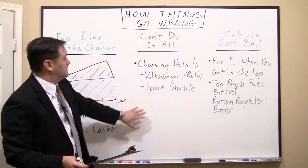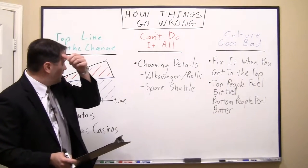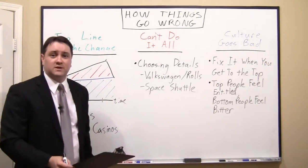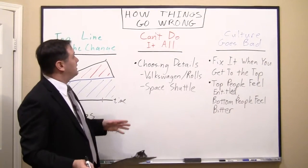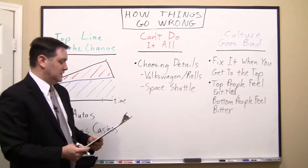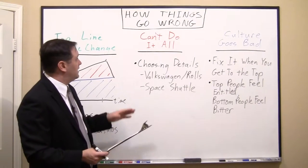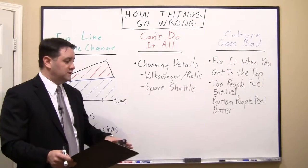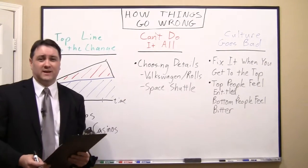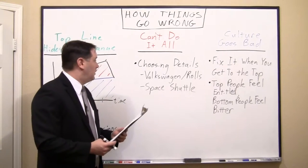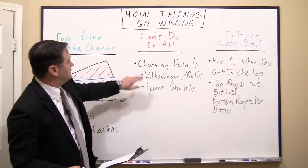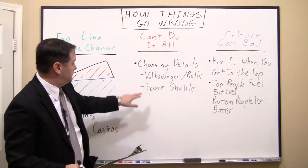The next one I want to talk about is an example of decision making. The truth is, in business we're oftentimes stressed for time and resources and bandwidth, and we can't always do it all. We can't look at every possible scenario, so we have to make decisions about which ones to prioritize. I'm going to give you a couple of examples of where those priorities actually ended up coming back to haunt the decision makers. I call this: choosing the details — you've got to choose which details to focus on.